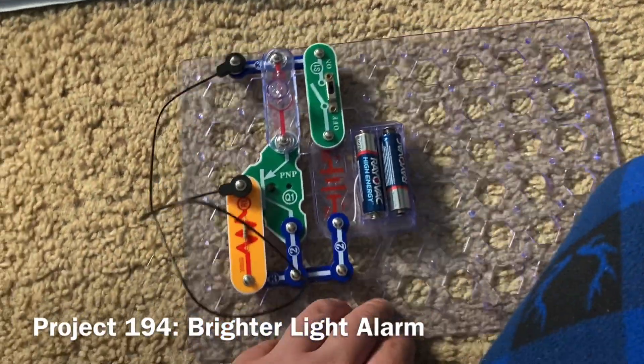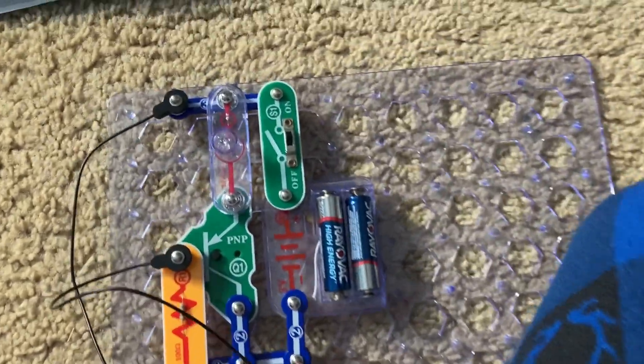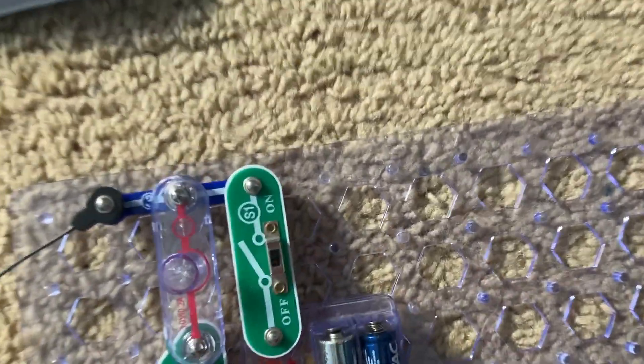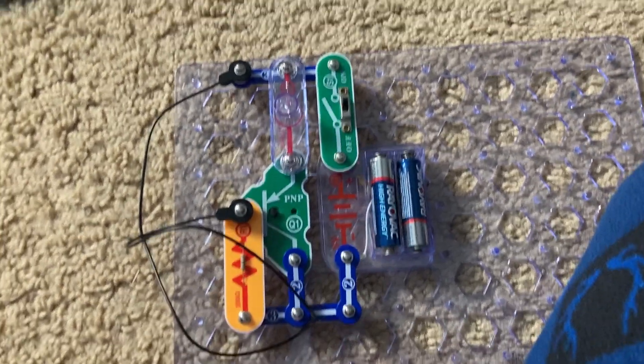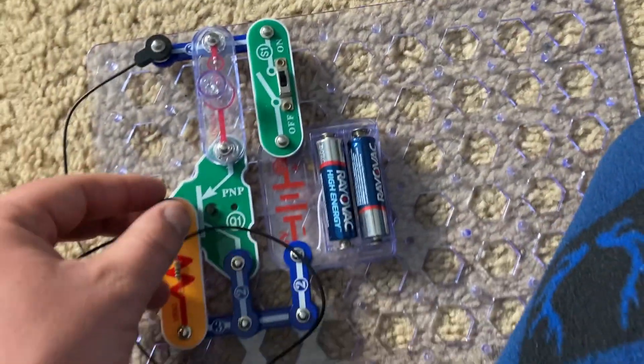For brighter light alarm, I replace the LED with the L1 lamp and the R3 resistor with the R1 resistor and the circuit works the same way.